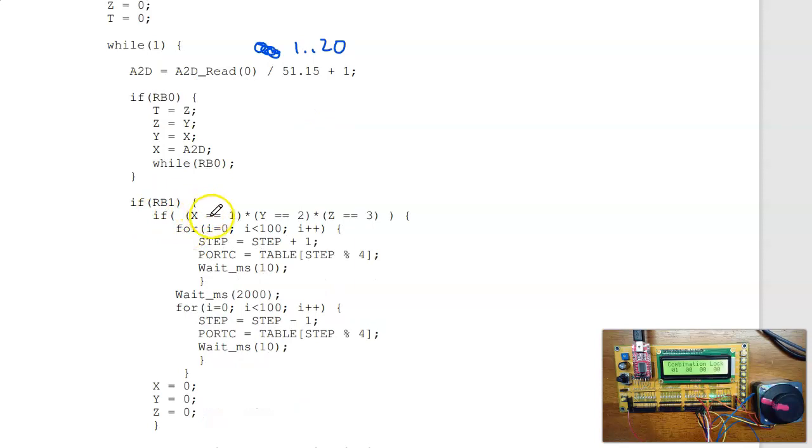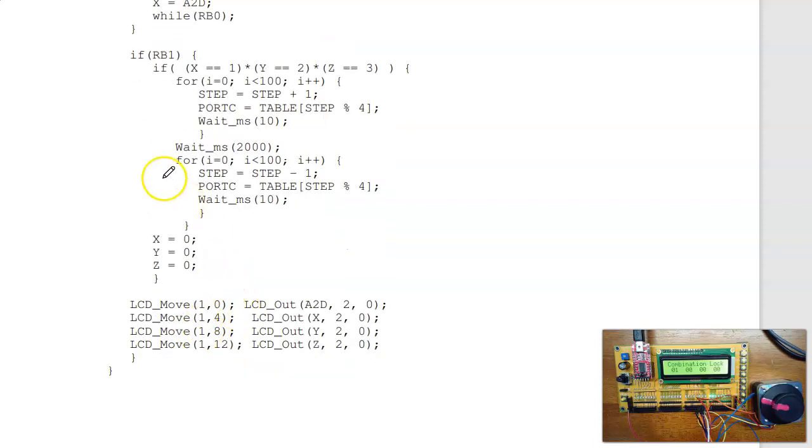then I'll step the motor forward 100 steps. Wait, step backwards 100 steps. Clear. And if nothing else, I just display the raw A to D number and my current combination that I'm testing.